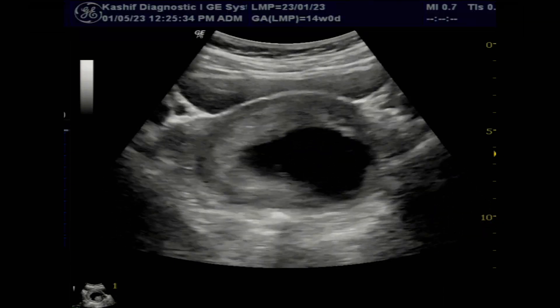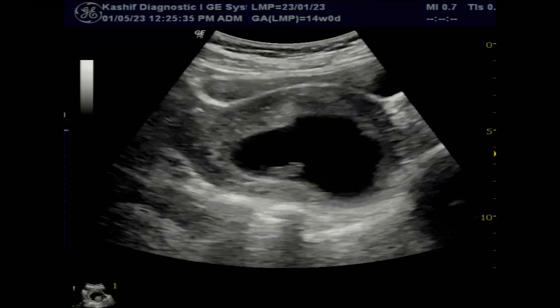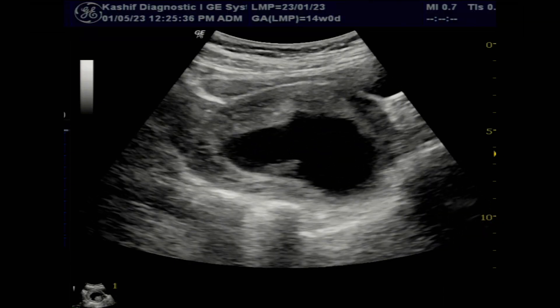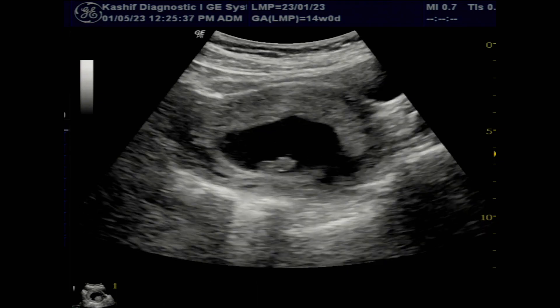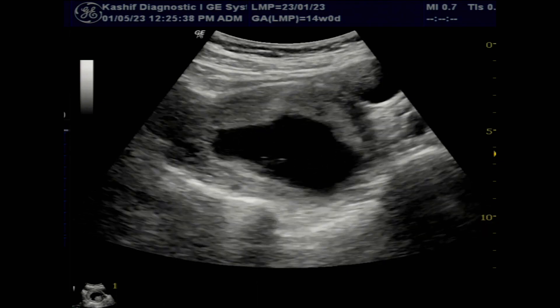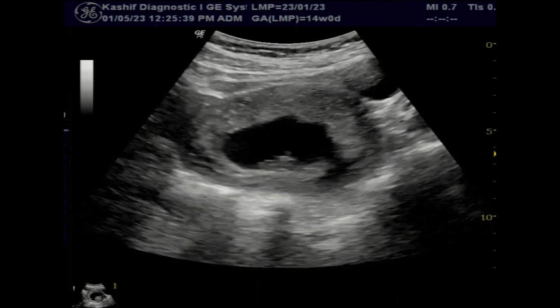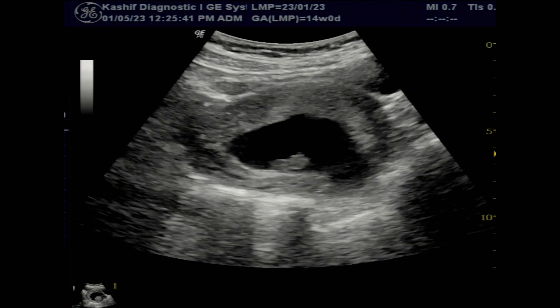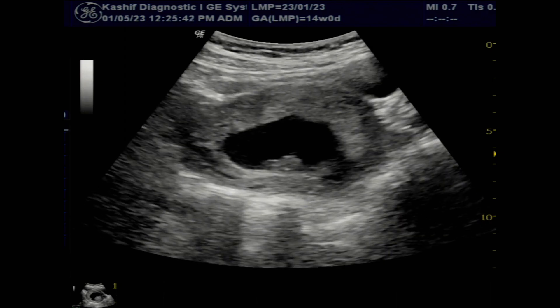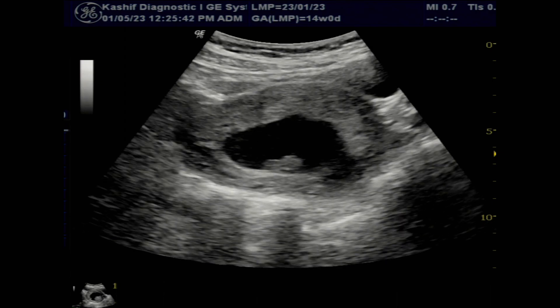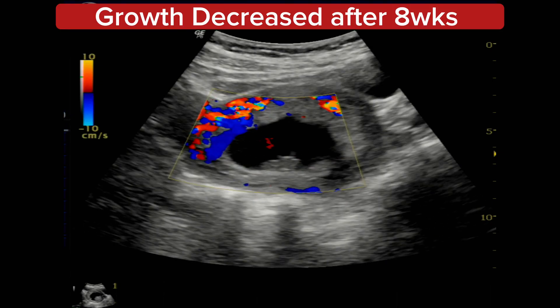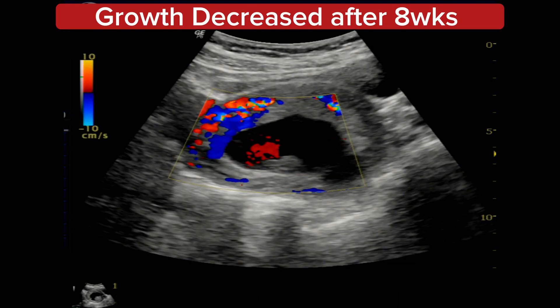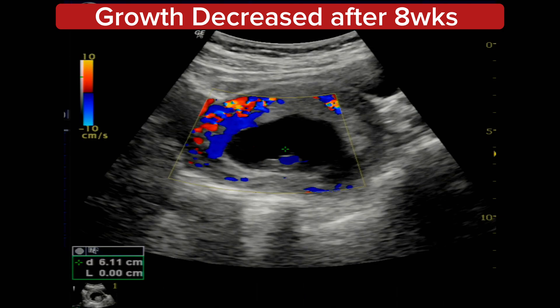The gestational sac has irregular margins. There is no perisac fluid or bleed. Regarding the fetal pole, no cardiac activity is seen and no internal blood flow is seen.